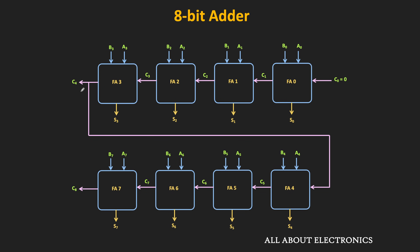By connecting two four-bit adders we can also build an eight-bit adder, where the output carry of one four-bit adder is given as input to the next four-bit adder. Adders FA0 to FA3 add the lower four bits while FA4 to FA7 add the higher four bits. In general, by connecting N full adders in parallel we can build an N-bit adder.